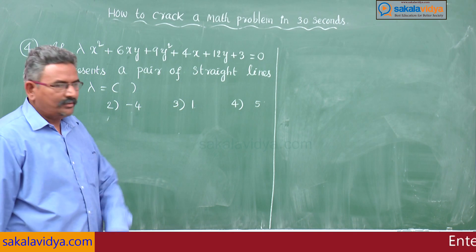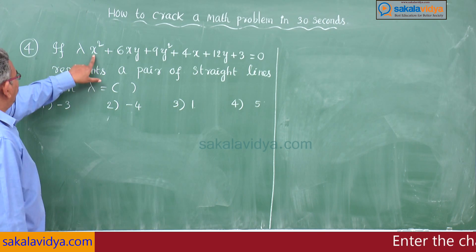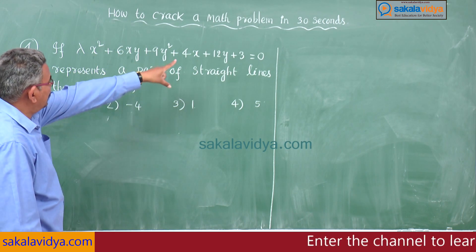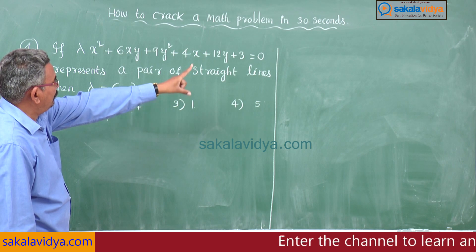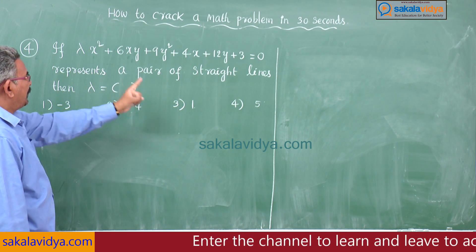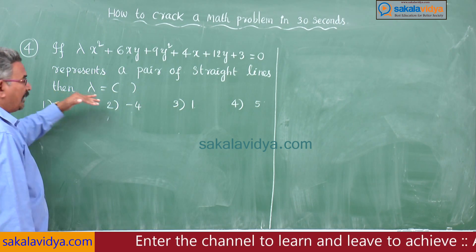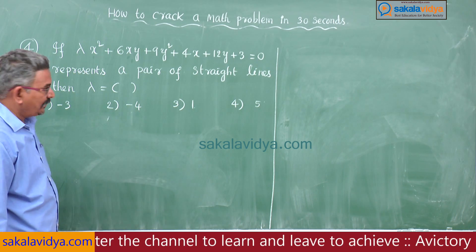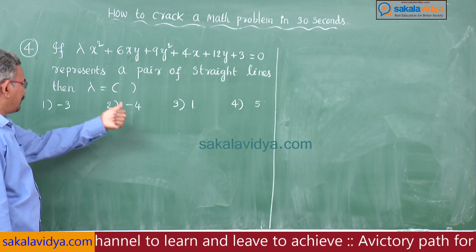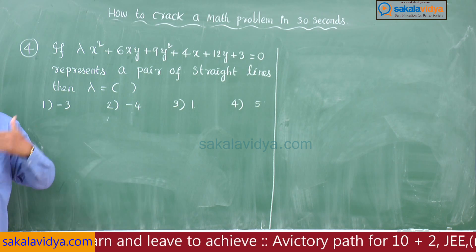Now, fourth problem: if λx² + 6xy + 9y² + 4x + 12y + 3 = 0 represents a pair of straight lines, then find λ. First option minus 3, second option minus 4, third option 1, fourth option 5.